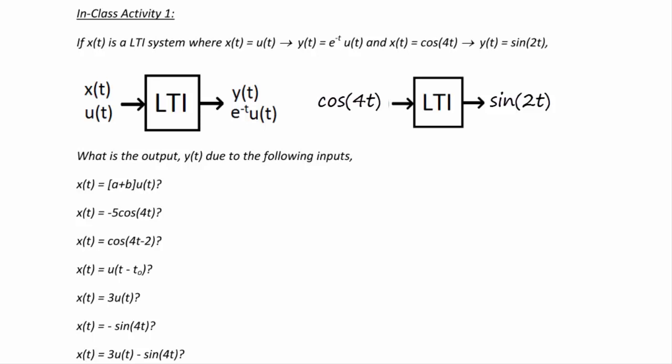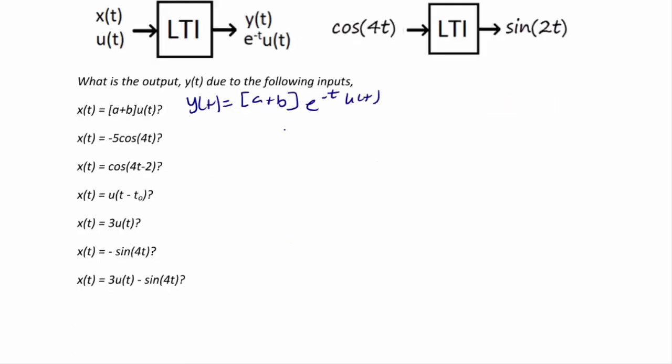What does the output y(t) do to the following inputs? The first one is a scaling problem: x(t) = (a + b)u(t). Since we know the output due to u(t) is e^(-t)u(t), then y(t) should be equal to (a + b)e^(-t)u(t). If the input is x(t) = -5cos(4t), then the output would be y(t) = -5sin(2t).